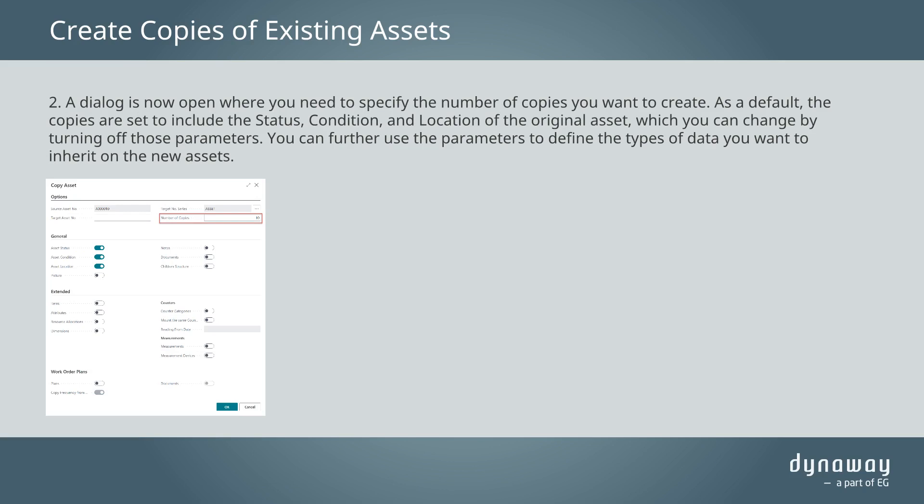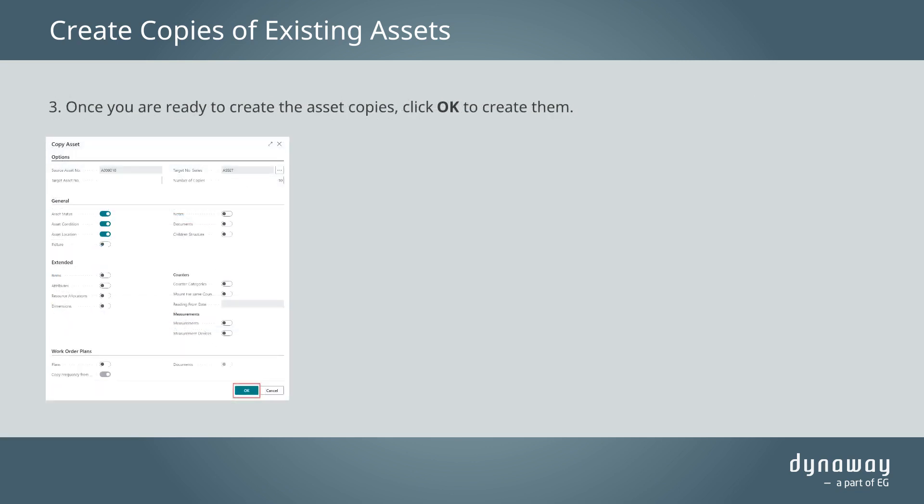You can further use the parameters to define the types of data you want to inherit on the new assets. Once you are ready to create the asset copies, click OK to create them.